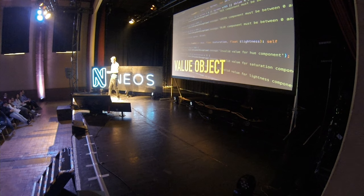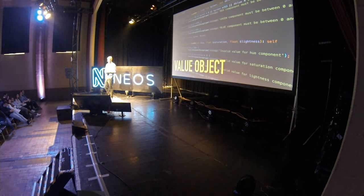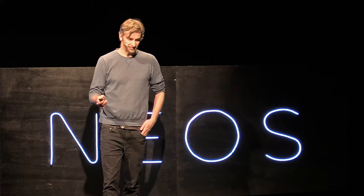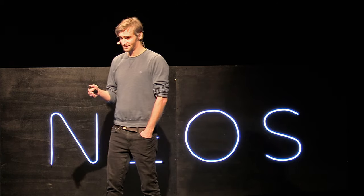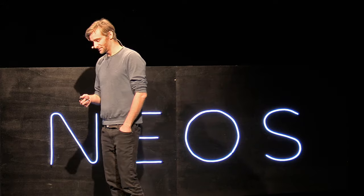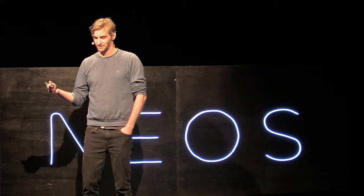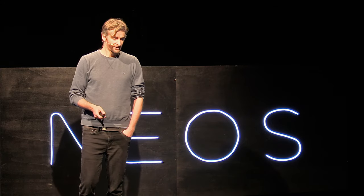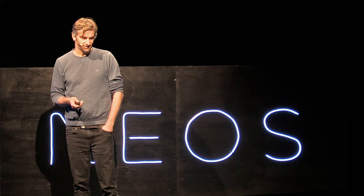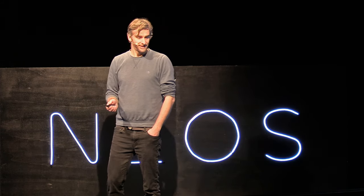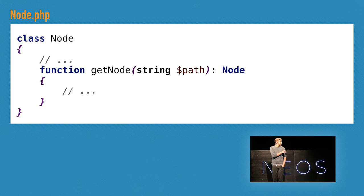In domain-driven design, you have entities — they are objects with their own identity. A customer stays the same customer even if you change the phone number. In contrast, you have value objects that are defined by their attributes. If you change a color, for instance, you get a new color. Let's get into an example from the core: this is the node class from the content repository.